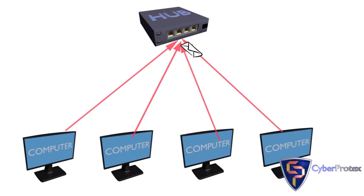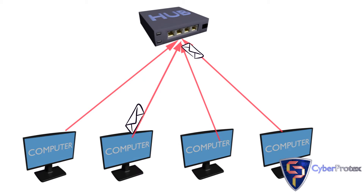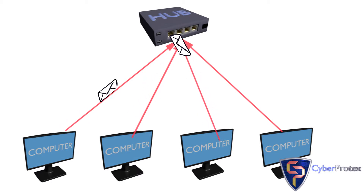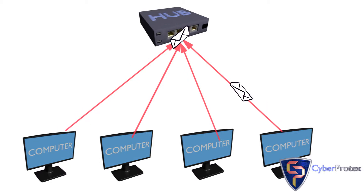The hub is the primary device in a collision domain on a network. A downside to the collision domain is that all devices connected are in the same domain. This can become less efficient the more devices we have connected to it.